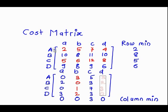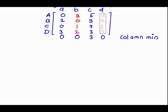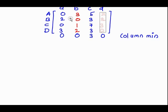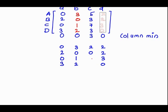After finding the column minimums, we subtract the smallest element from each column. The first, second, and fourth column minimums are 0, so there is no change there. When we subtract 3 from the third column, we get 2, 0, 4, 0. The resulting matrix after column reduction is: Row 1: 0, 3, 2, 2; Row 2: 2, 0, 0, 2; Row 3: 0, 1, 4, 3; Row 4: 3, 2, 0, 0.